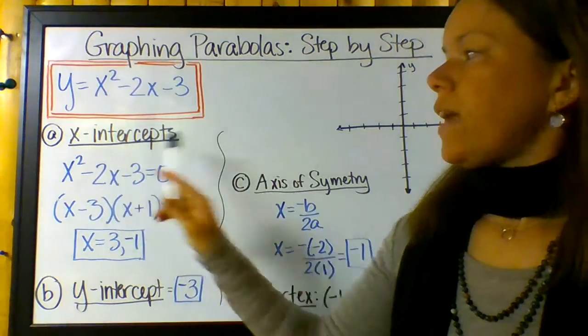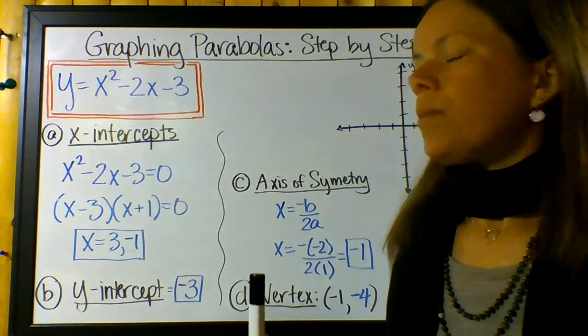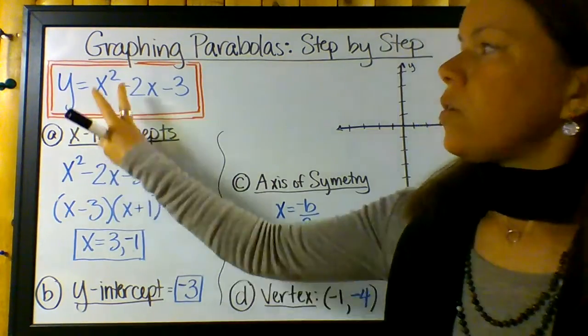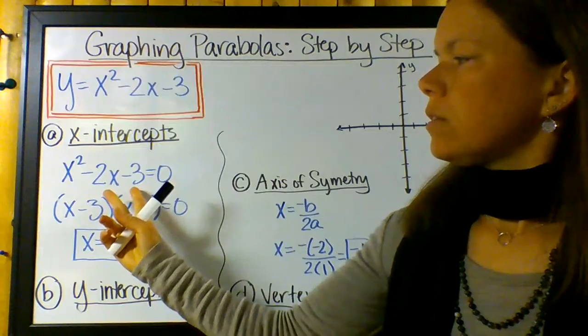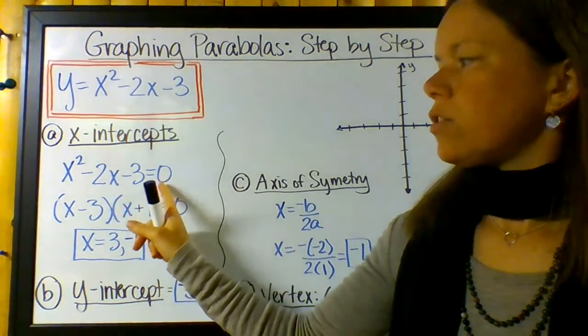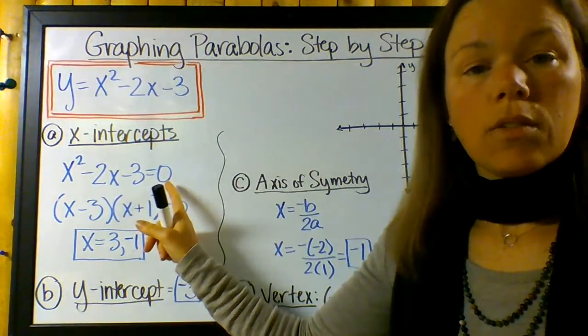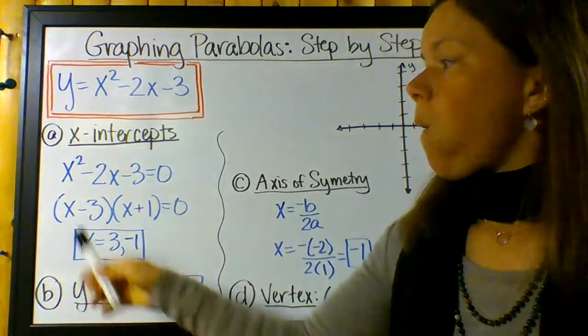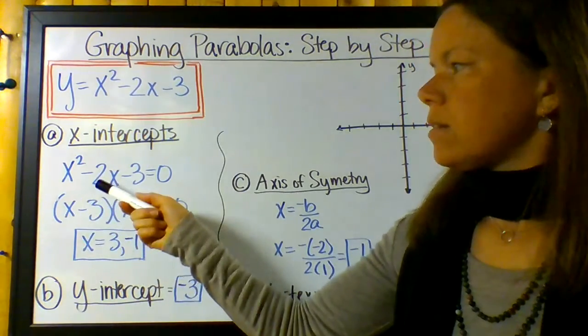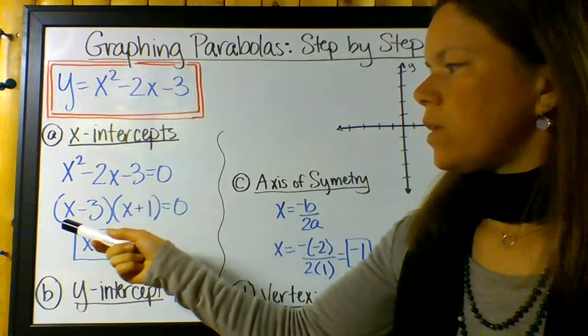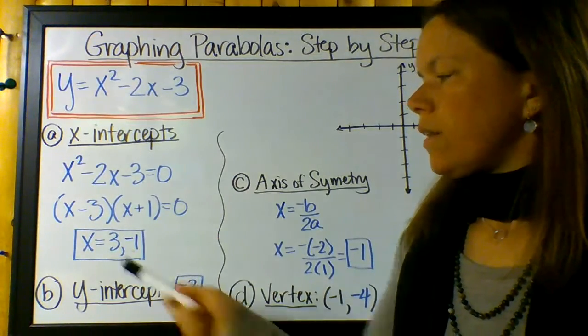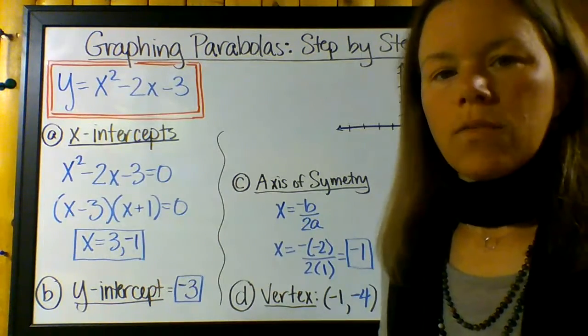So we're going to find the x-intercepts first. Remember, the x-intercepts are where y equals zero. So I flipped the equation and stuck in a zero here, okay? So I flipped the equation so that the zero would be on the other side, on the right, because that's where I like it. And then I said, well, let's see if we can factor this. And indeed, I factored it: x squared minus 2x minus 3 equals x minus 3 times x plus 1. Therefore, x equals 3 and negative 1.